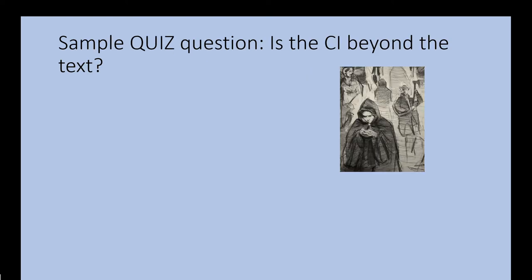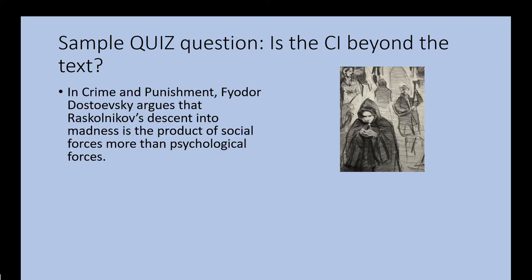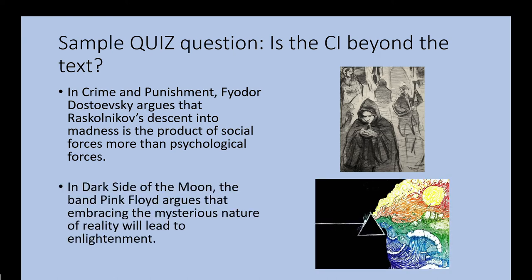Pause the video and see if this CI is beyond the text. This is a tough example because you may not know Raskolnikov is a character. But some students can figure out just by the way the sentence is written that he is a character, and ultimately this CI is not beyond the text — it's an argument about why a character descends into madness. The next example is beyond the text because it's an argument about two ideas: embracing the mysterious nature of reality and enlightenment, with a causal claim between them.